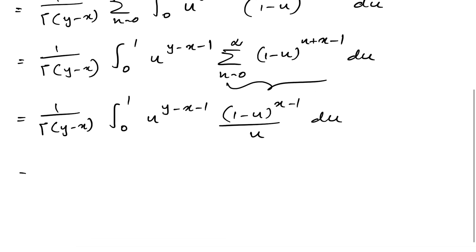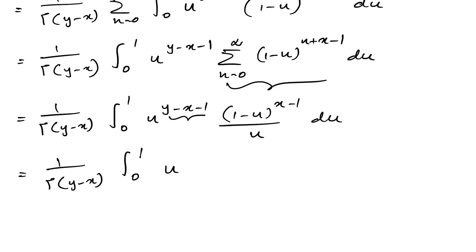Then we have 1 over gamma(y-x) times the integral from 0 to 1 of u^(y-x-1-1) times (1-u)^(x-1) du.